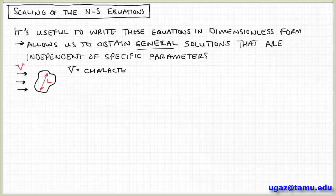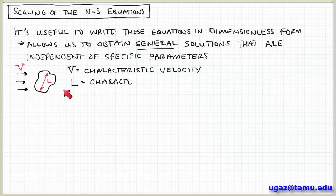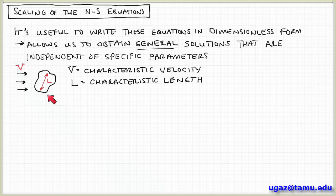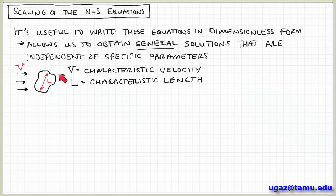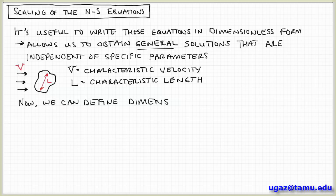How do we apply non-dimensionalization to the Navier-Stokes equations? We propose characteristic scales. Imagine a flow with some characteristic velocity V and an object with characteristic length scale L — for example, the diameter of a pipe or the size of an object in the flow. These are just general ideas of the overall size and velocity scales involved.